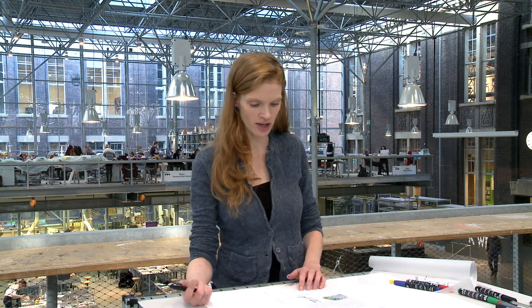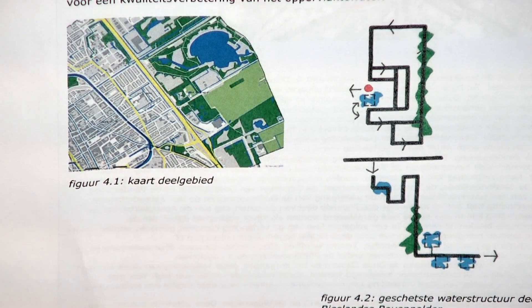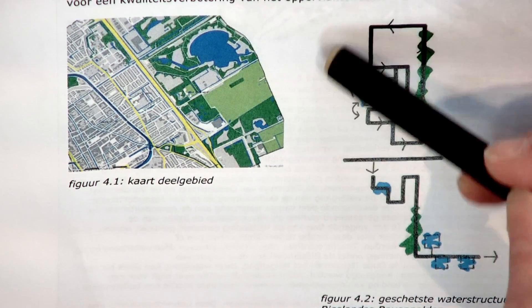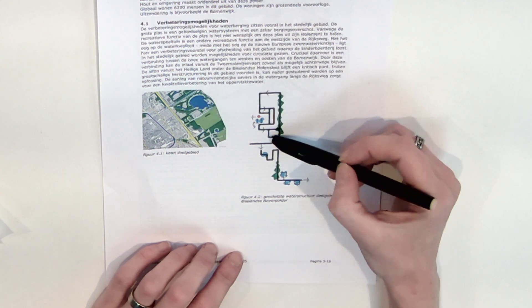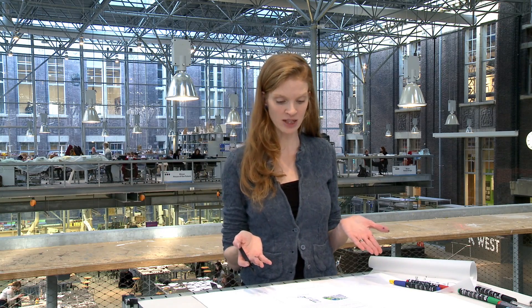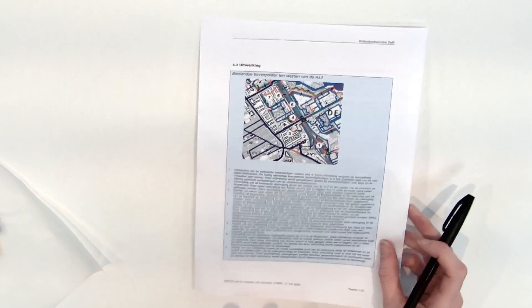They will also add extra surface water — extra ponds and the widening of existing canals. They will remove missing links and dead ends so that water can circulate, which improves water quality. They will also make ecological embankments with very slow slopes and a lot of different plants, which purify the water and add to water storage capacity.